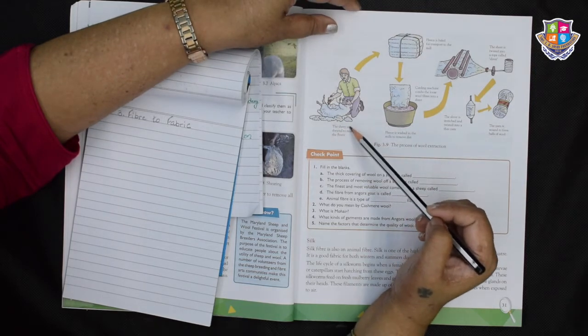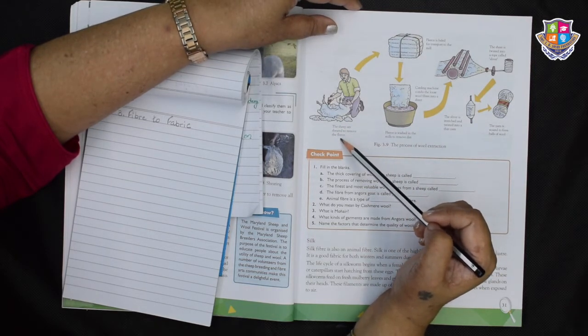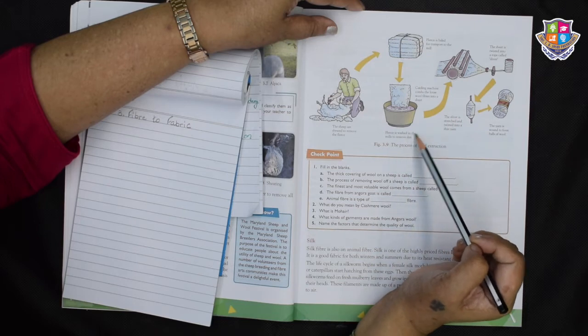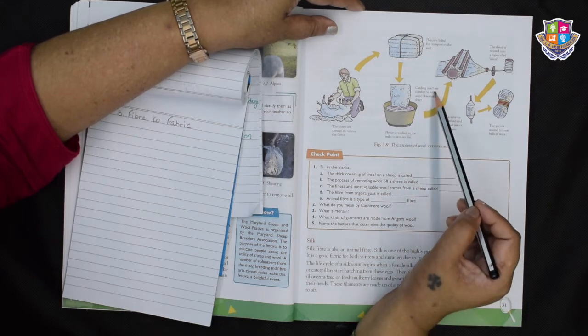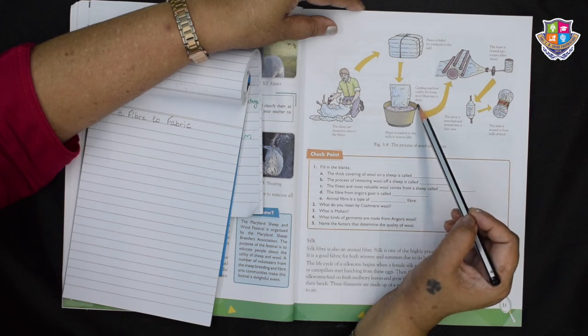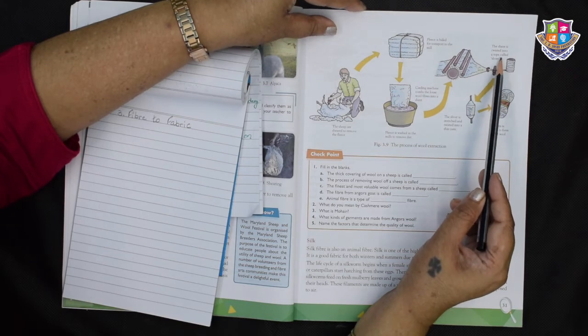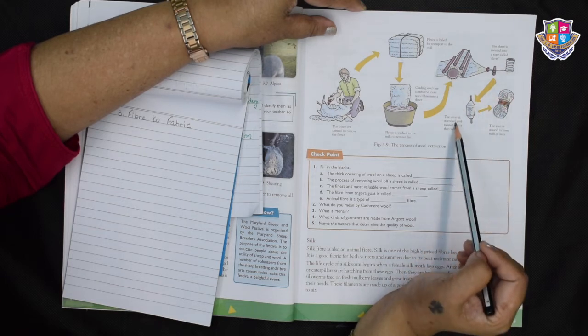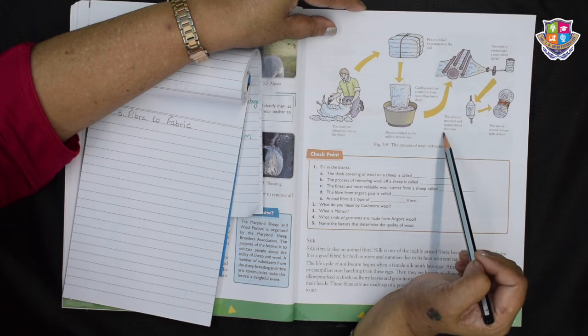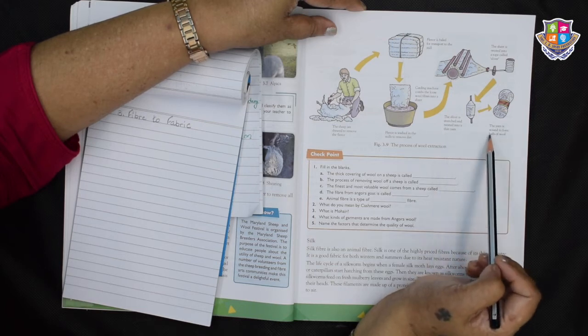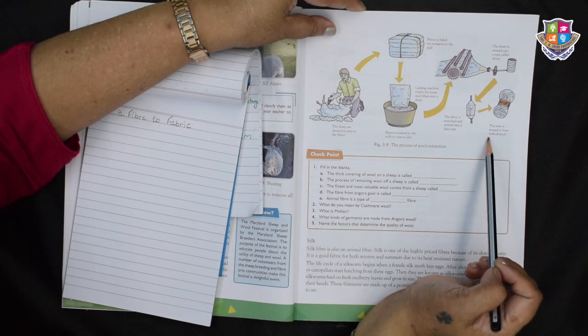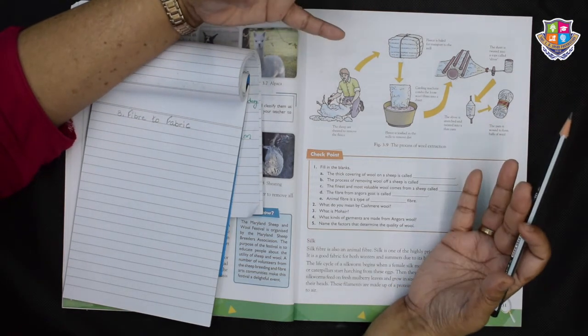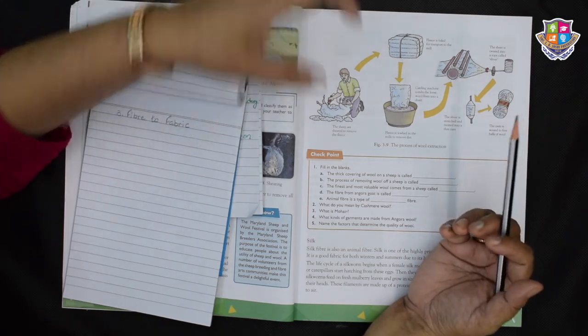This is the process here. The sheep are sheared to remove the fleece. Then the fleece is baled for transport to the mill. Then the fleece is washed in the mills to remove the dirt. Then carding machine combs the loose wool fibers into sheet. After that the sheet is twisted into a rope called sliver. Then the sliver is stretched and twisted into a thin yarn. After that the yarn is wound to form balls of wool. Once again I am encouraging you to learn crochet. It's a lovely art.